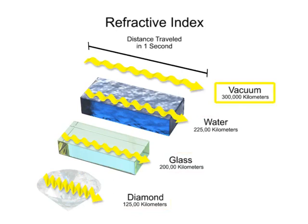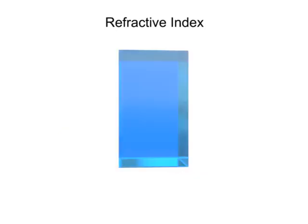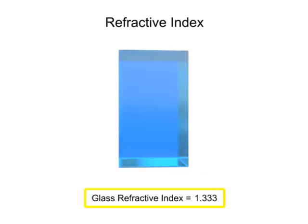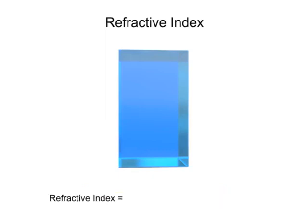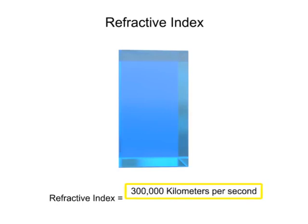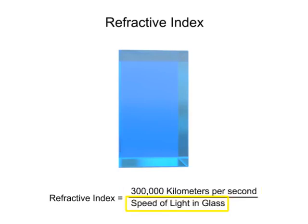For example, typical glass has a refractive index of 1.33. This is calculated by dividing the speed of light in a vacuum, 300,000 kilometers per second, by the speed of light in glass, 225,000 kilometers per second.